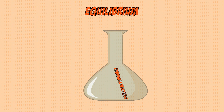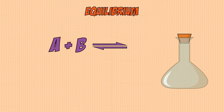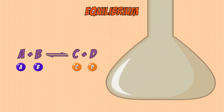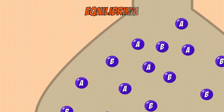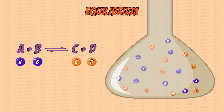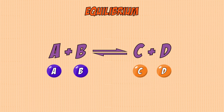Equilibrium occurs when you have a reversible reaction in a closed system — meaning nothing can enter or leave. Consider reactants A and B forming products C and D. At the start, you only have reactant molecules, but as they collide they form products, so reactant particles decrease and product particles increase. In a normal reaction this continues until all particles become products, but a reversible reaction never ends.